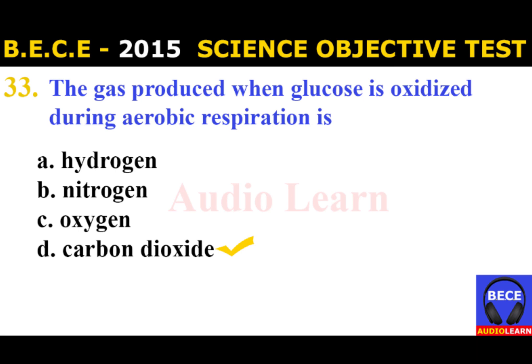Number 33: The gas produced when glucose is oxidized during aerobic respiration is A. Hydrogen, B. Nitrogen, C. Oxygen, D. Carbon dioxide. The answer is D. Carbon dioxide. The gas produced when glucose is oxidized during aerobic respiration is carbon dioxide.